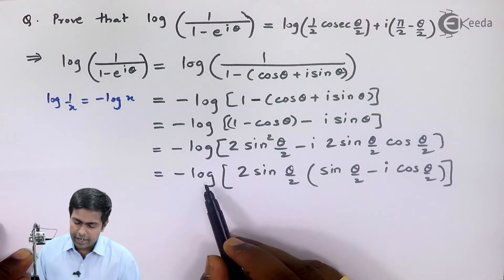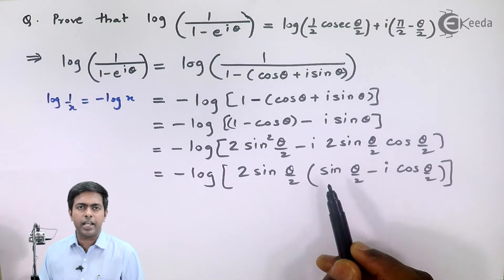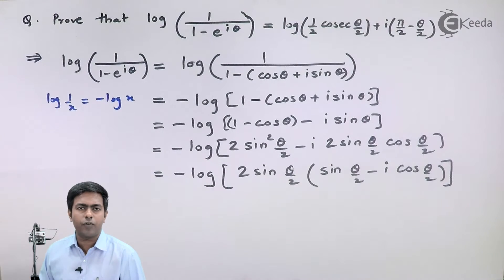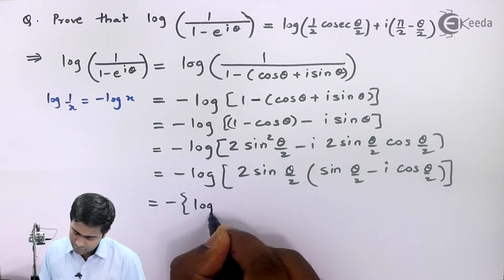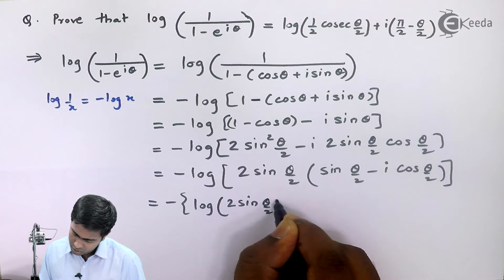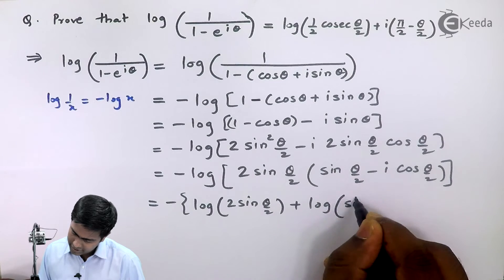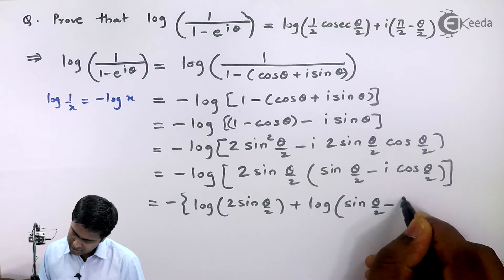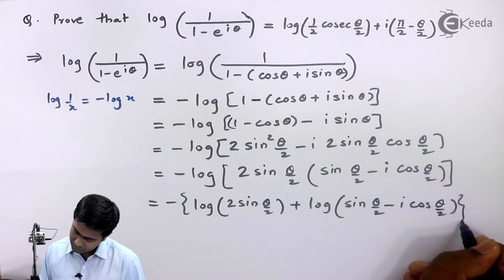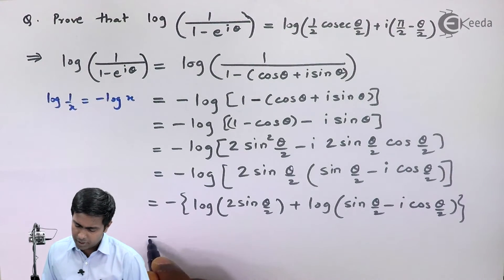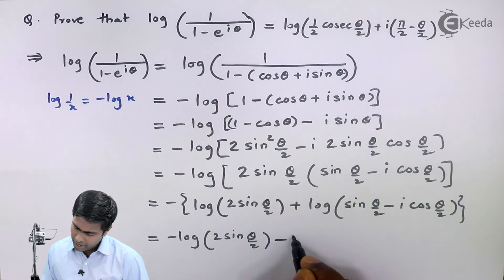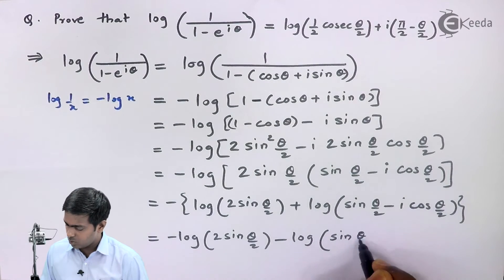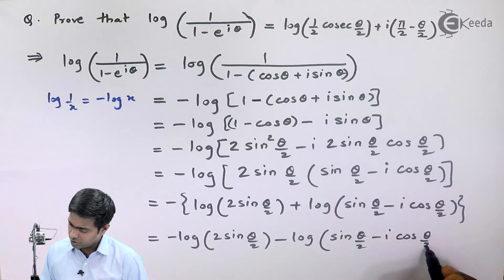Since we have two terms multiplying inside the log, we apply the product rule for logarithms, splitting it as log of 2·sin(θ/2) plus log of sin(θ/2) minus i·cos(θ/2). Due to the minus sign outside, this becomes minus log of 2·sin(θ/2) minus log of sin(θ/2) minus i·cos(θ/2).